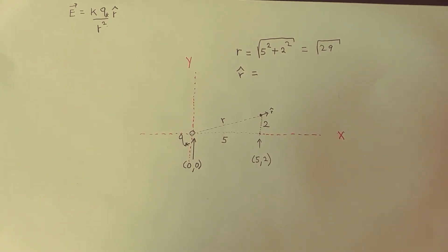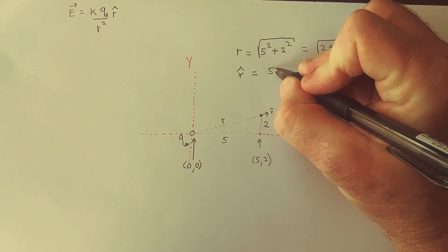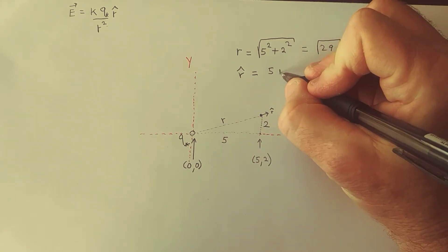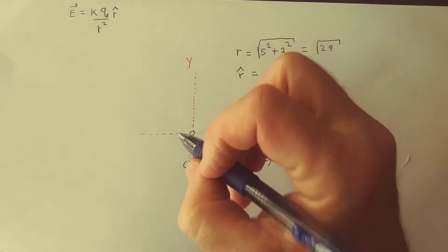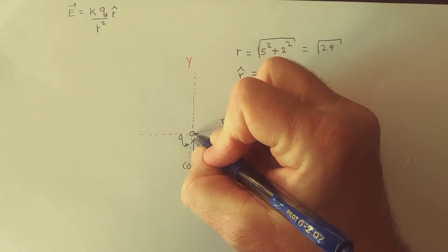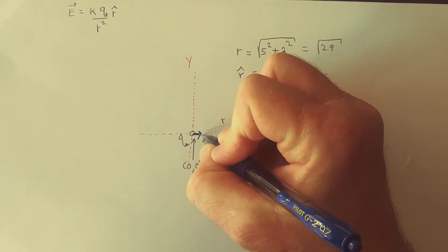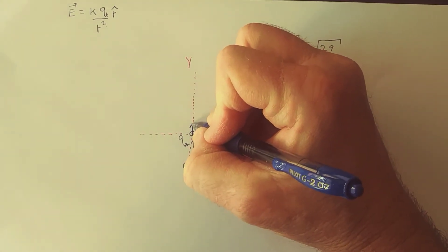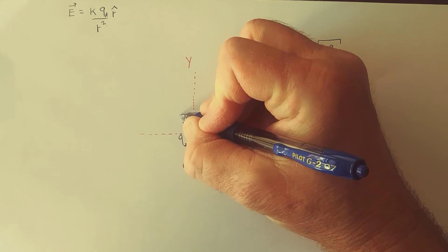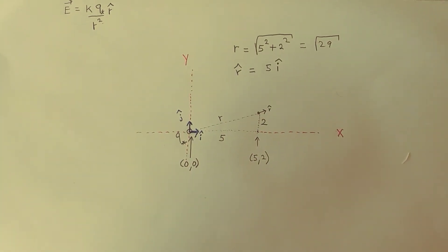We need a vector with information about distance. So we're moving 5 in the horizontal direction. So here is the i hat vector in the x direction. We have vectors i hat, a unit vector to the right in the horizontal direction, and j hat is a unit vector in the upwards direction.